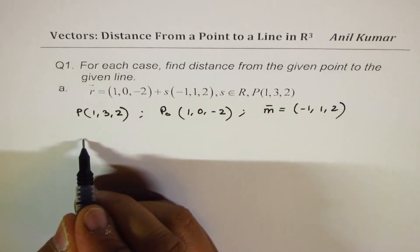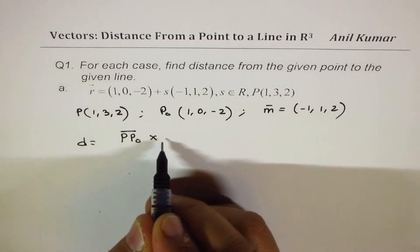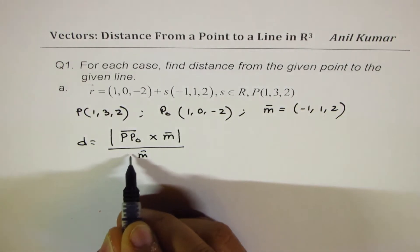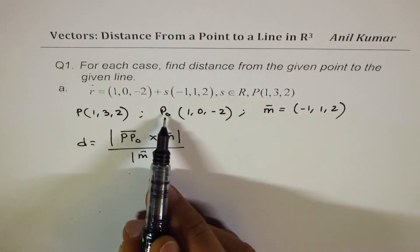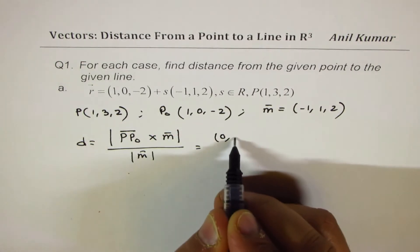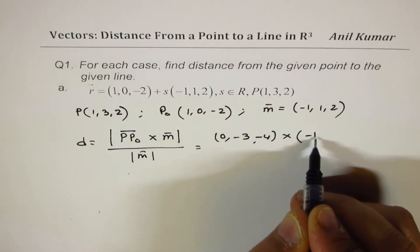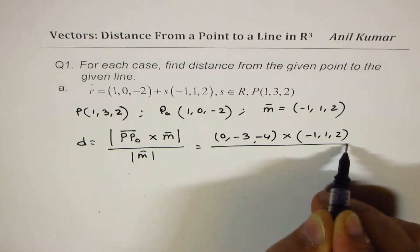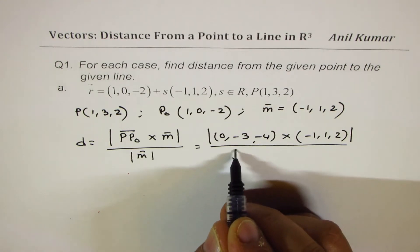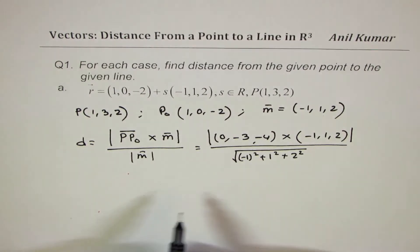To find the shortest distance D, we'll use the cross product of vector PP0 with the direction vector. That gives you the normal — find its magnitude and divide by the magnitude of the direction vector itself. So what is PP0? We do (1 minus 1, 0 minus 3, minus 2 minus 2), which gives us (0, minus 3, minus 4). Cross with (minus 1, 1, 2), divided by the magnitude of M, which is the square root of (minus 1) squared plus 1 squared plus 2 squared.